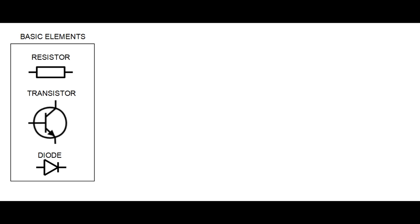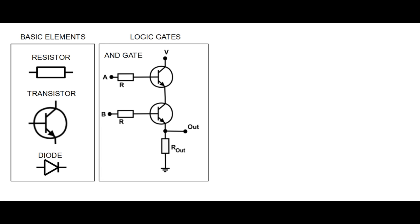Using these basic elements we can create something called logic gates, and this is very important because this is the link that allows us to go from analog electronics to digital electronics.